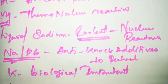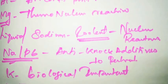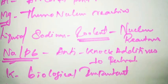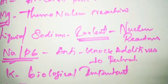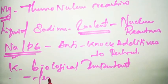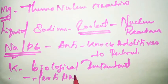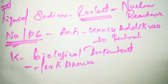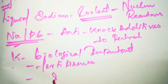Potassium is also used in the preparation of fertilizers — it is one of the key elements in salt fertilizers. Additionally, potassium is used for the preparation of soap.